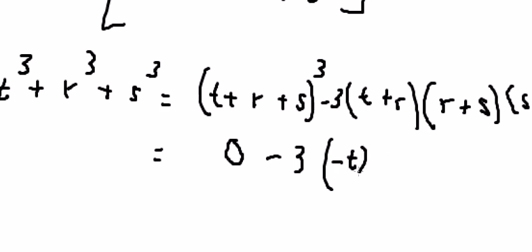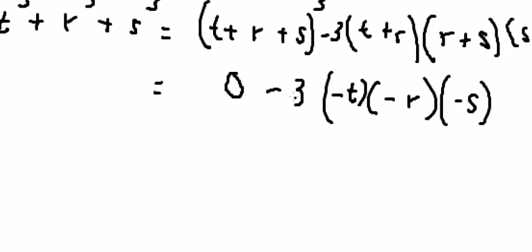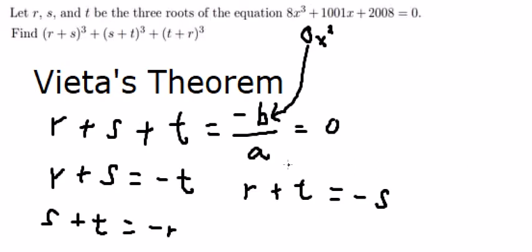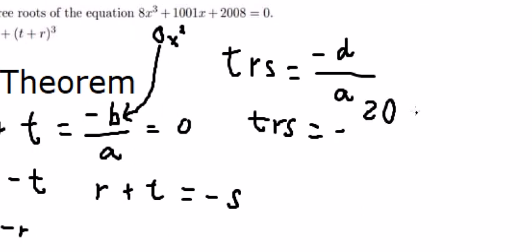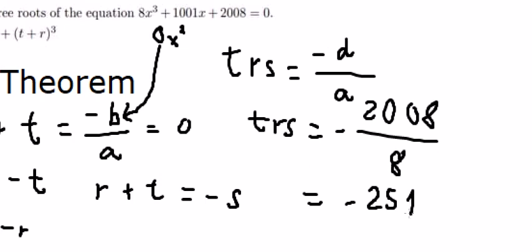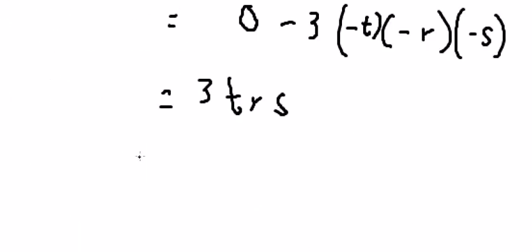We have negative T, negative R, and negative S, giving us 3TRS. By Vieta's theorem, TRS equals negative D divided by A, where D is 2008 and A is 8. So negative TRS gives us the value we need.